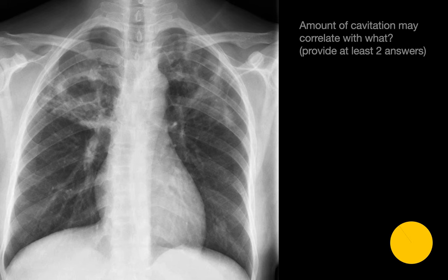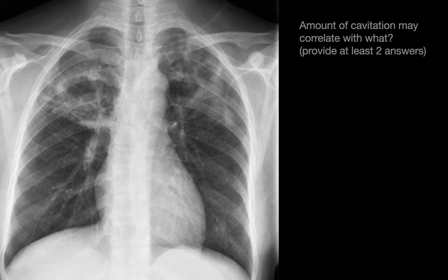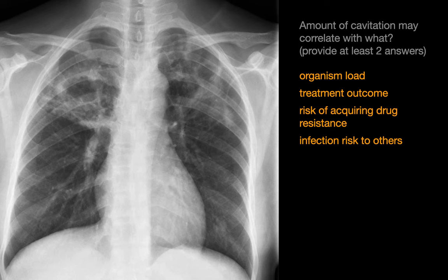In TB, what are things that cavitation may directly correlate with? Cavitation in the setting of TB is associated with increased organism load, less favorable treatment outcomes, increased risk of acquiring drug resistance, and a greater infection risk to others.